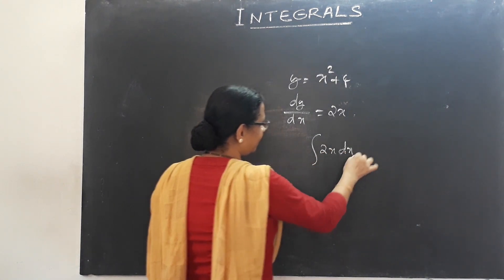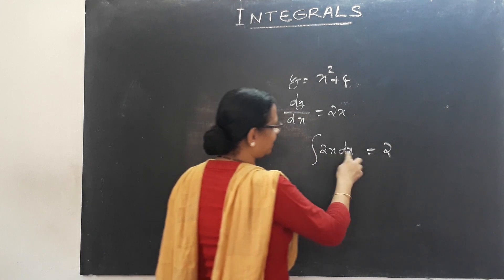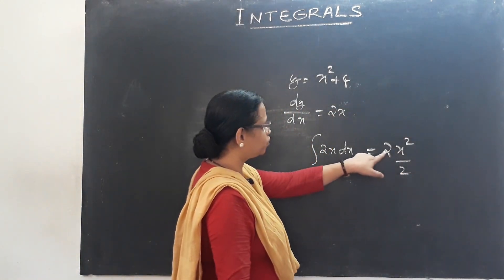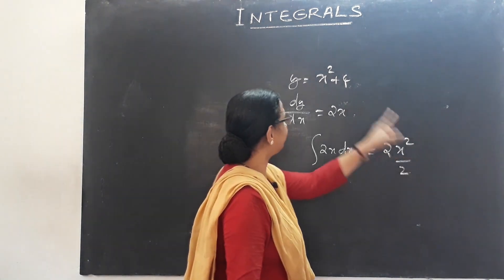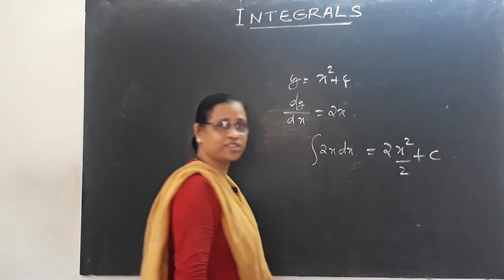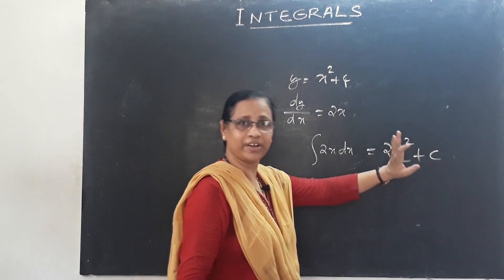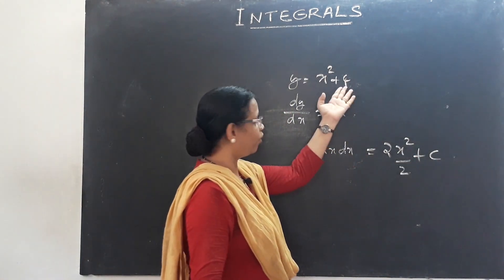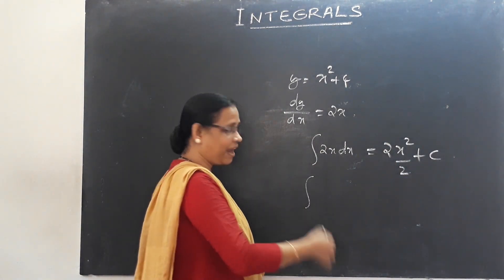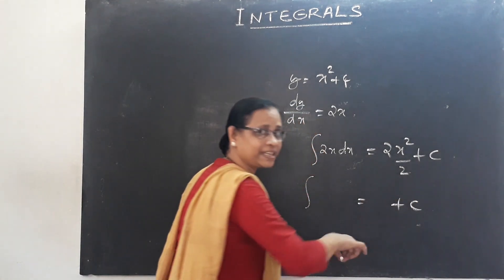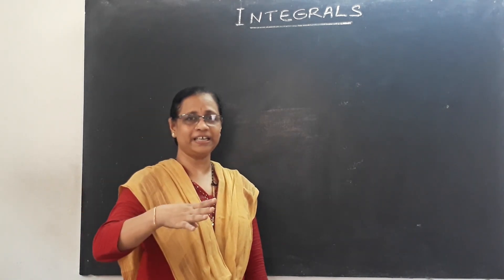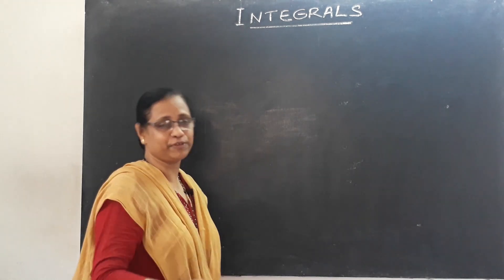The integration of 2x: we raise the power of x by one to get x², then divide by the new power and cut the coefficient 2. So the integral of 2x is x². However, the constant 4 is lost when differentiating, so integration gives x² plus an arbitrary constant c.